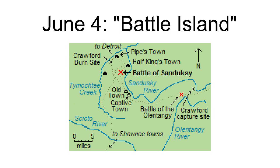Both sides slept with arms at the ready and surrounded their positions with large fires to prevent surprise night attacks. In the first day of fighting, the Americans lost five killed and 19 wounded. The British and Indians suffered five killed and 11 wounded. The American volunteers scalped several of the Indian dead, while the Indians stripped the clothing from dead Americans and scalped at least one. Fifteen Pennsylvanians deserted during the night and reached home to report Crawford's army had been cut to pieces.